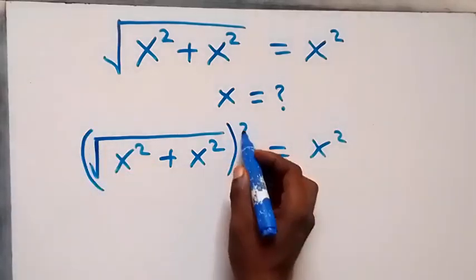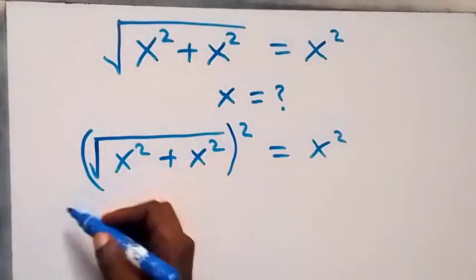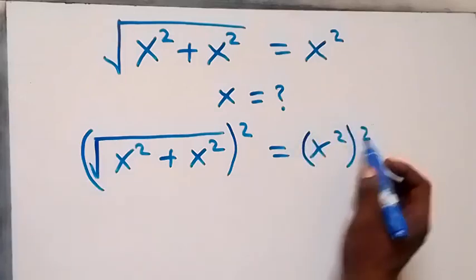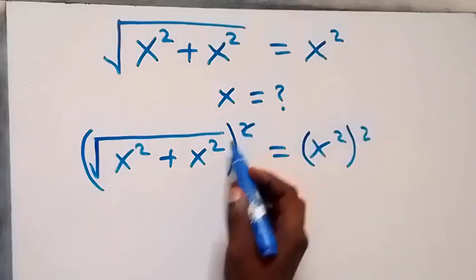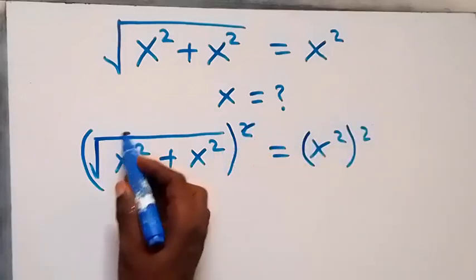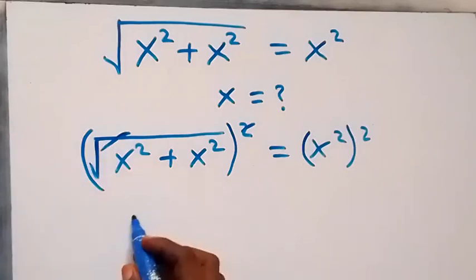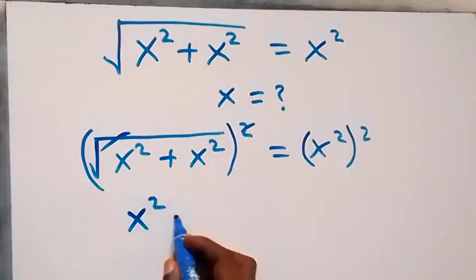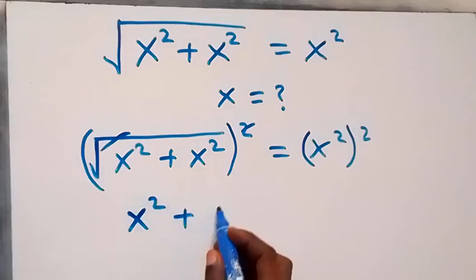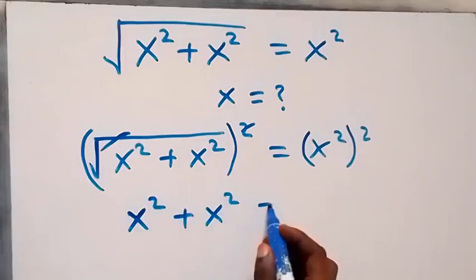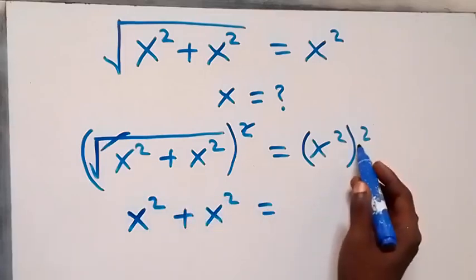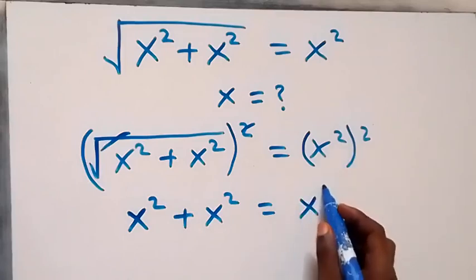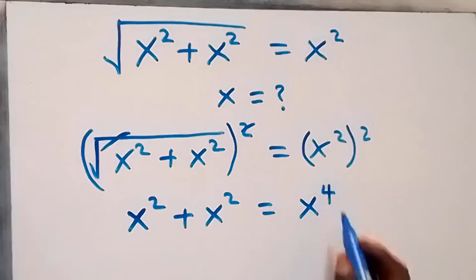We square both sides in order to remove the square root. After squaring, we are left with x squared plus x squared on the left, and on the right this power multiplies to give us x raised to the power 4.